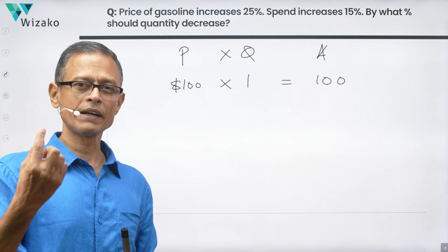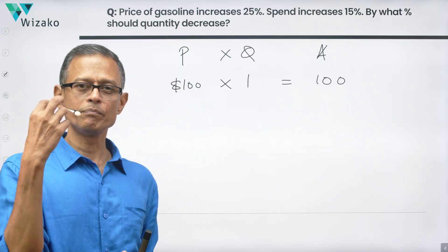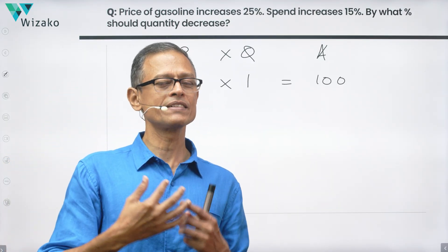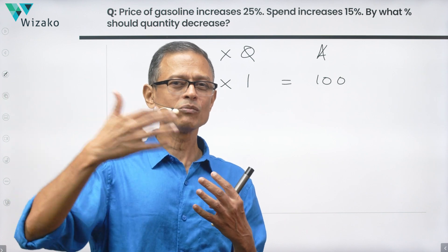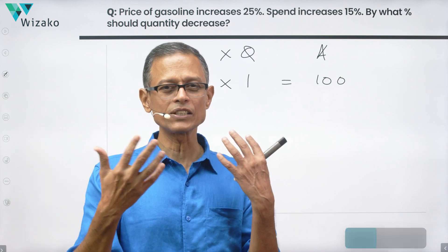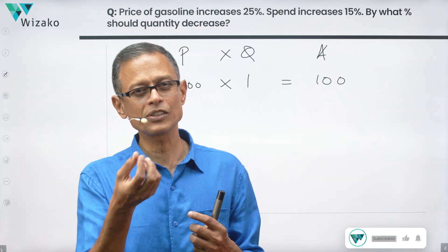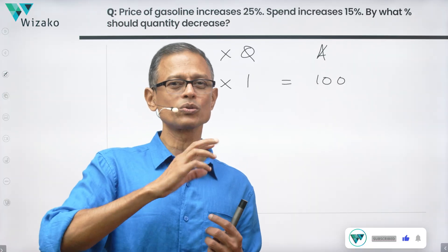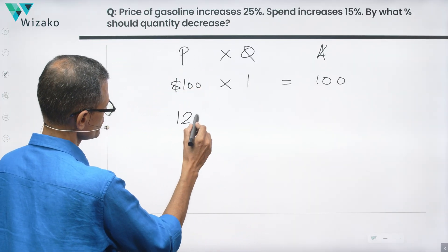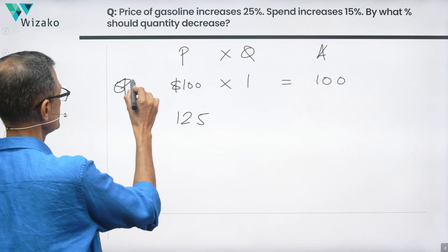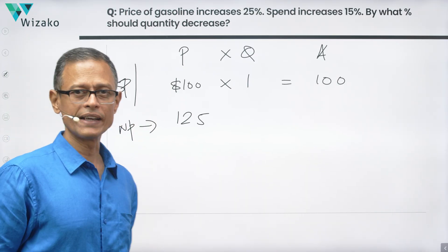The price goes up by 25%. In percentages, assuming the base value is 100 basically gives us this directly — 25% more than 100, you don't need to do any calculation. If I had taken, say, 60, then 25% more than that you'd need to think. Here you don't need to think at all. The new price is essentially $125.